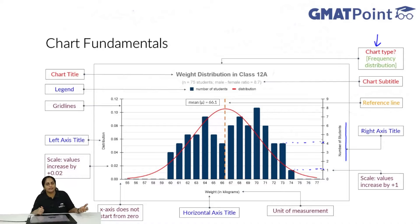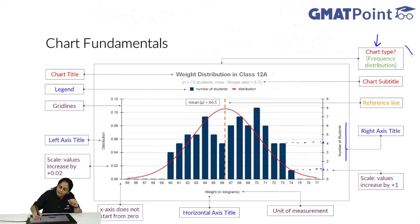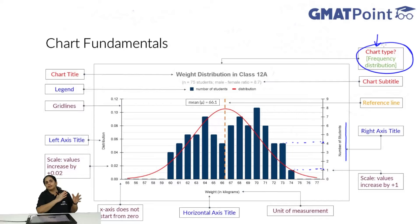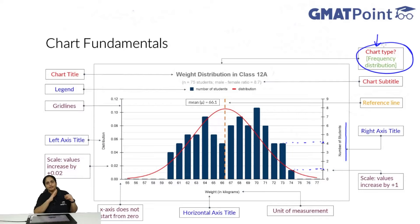For example, one student has the weight of 74 kgs, four students have the weight of 73 kgs, and so on. Basically, here we are given the weight distribution of students in the particular class as a frequency distribution diagram. So this is the chart type - it can be a line chart, bar chart, or others. The first thing you should understand is what is this chart type. You have to familiarize yourself with all the different chart types, and we'll be covering all of them in our video course.